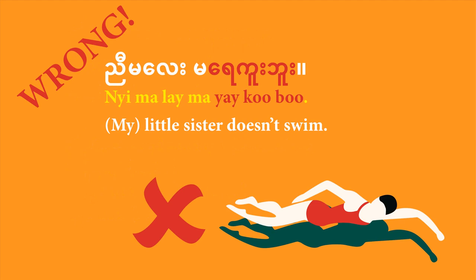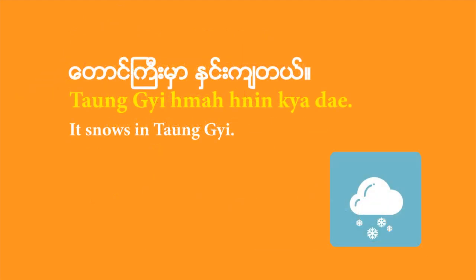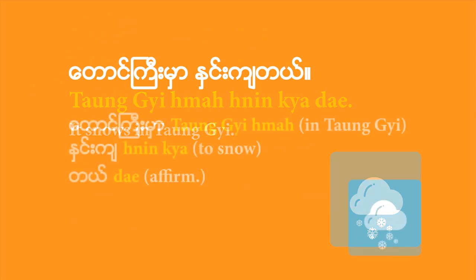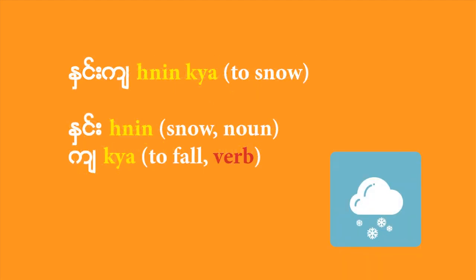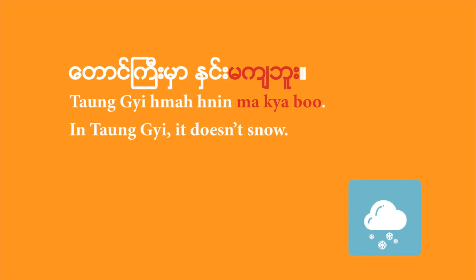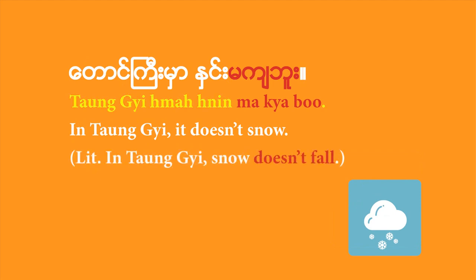Let's take another example. 'Dangji ma nengja de' — in Dangji, it snows. Dangji is the city's name; 'Dangji ma' means in Dangji or at Dangji. 'Nengja' is to snow in the affirmative form, and 'dare' is the affirmative sentence-ending. To properly negate the verb to snow, 'nengja,' you need to break it into its components: 'neng' is the noun snow, and 'ja' is the operative verb meaning to fall. So if you need to say it doesn't snow in Dangji, you negate the verb to fall — and you say 'Dangji ma neng majubu' — it doesn't snow in Dangji.